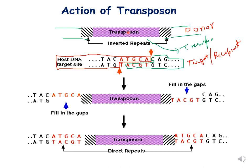Now let's see the action of a transposon. A transposon is present in a donor chromosome; the black portions represent inverted repeats. The transposase enzyme, encoded by the transposon's coding sequence, facilitates insertion into the recipient or target DNA. A staggered cut is formed in the target, and the transposon with its coding sequence and inverted repeats gets inserted between the staggered cuts. Direct repeats are then generated in the host DNA.